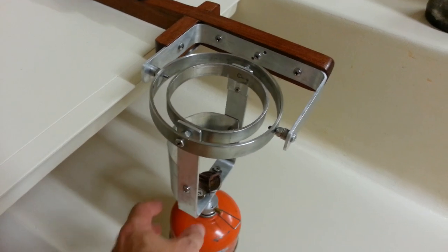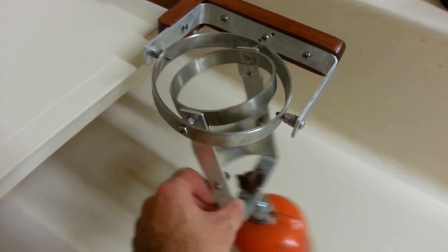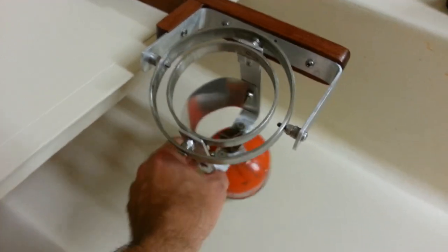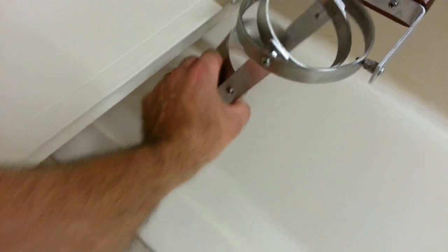I put some pivot points in there using bolts and nylock washers and nuts so the stove can pivot forward and back and then athwartships so it's got a full 360 degrees of movement here.